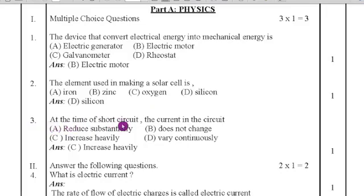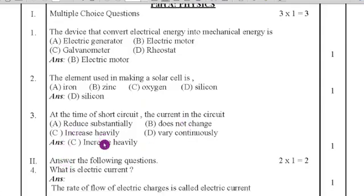Third question, at the time of short circuit, the current in the circuit, what happens in the circuit, it increases heavily. The overflow of current will be there. So, option C increases heavily is the right answer.